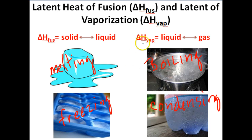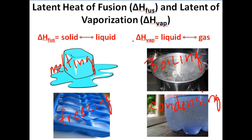When we talk about heat of vaporization, we are referring to the amount of energy that is associated with a liquid turning into a gas or a gas turning into a liquid. So today we're going to talk about latent heat of fusion and latent heat of vaporization, and look at the energies that must be released or absorbed when these four processes take place.